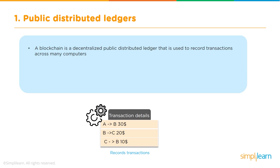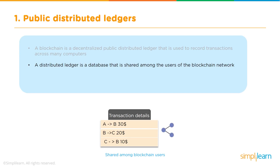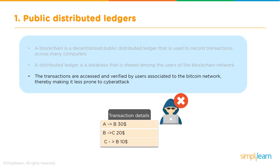Now, what are the features of blockchain? A blockchain is a decentralized public distributed ledger used to record transactions across many computers. Here is a sample transaction — a set of three transactions: A transferring money to B, B to C, and C to B. A distributed ledger is a database shared among all users who are part of the blockchain network. The transactions are accessed and verified by users associated with the Bitcoin network, making it less prone to cyber attack, and it is enclosed within all the participants who are part of the network.